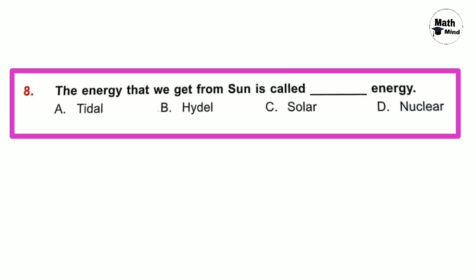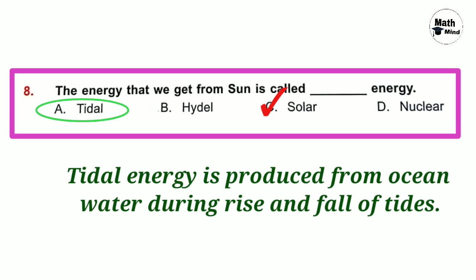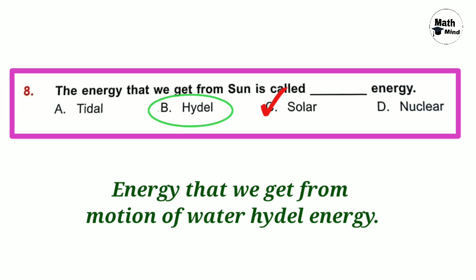Option D is correct — this is called a game controller or gamepad. Question number 8: The energy that we get from the sun is called dash energy. Option C is correct — solar energy. Tidal energy is produced from ocean water during rise and fall of tides. Option B — hydro energy — is energy obtained from the motion of water.